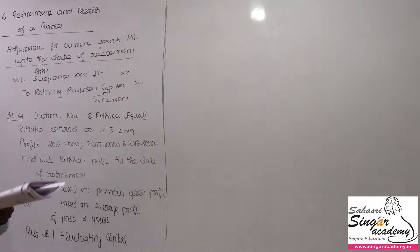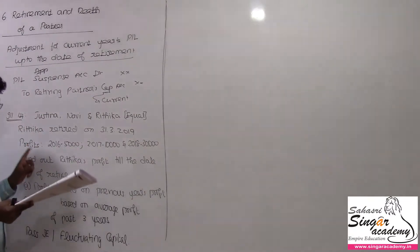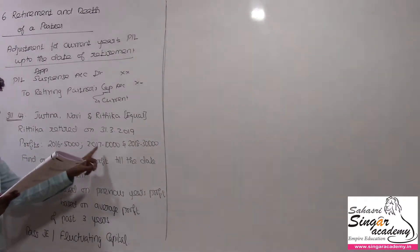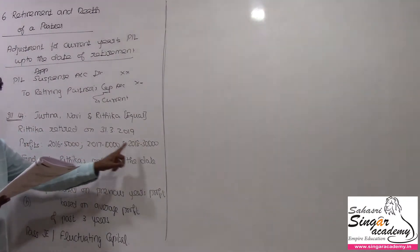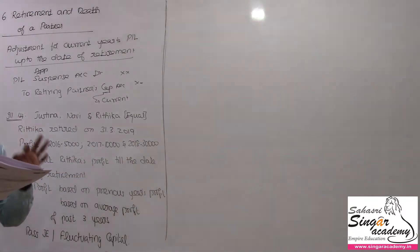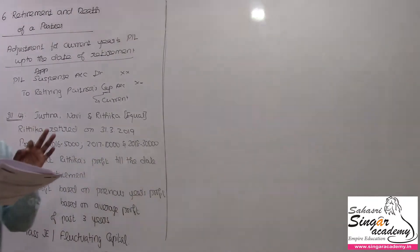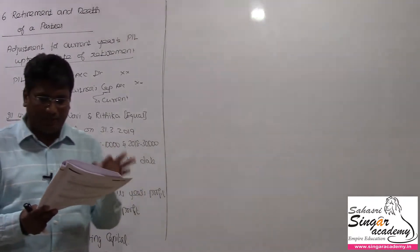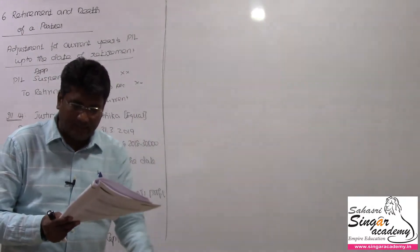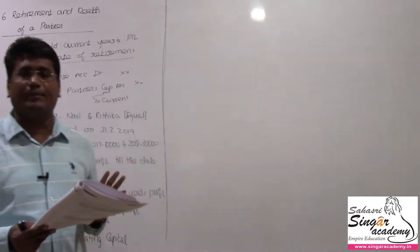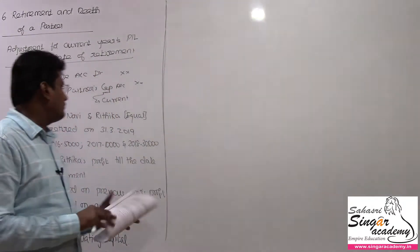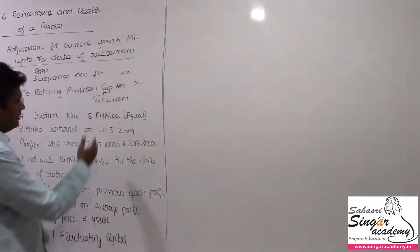Profits of the preceding years are as follows: 2016 — 5,000; 2017 — 10,000; 2018 — 30,000 rupees. Find out the share of profits of Hrithika for the year 2019 till the date of retirement.